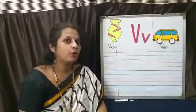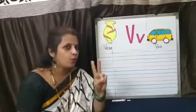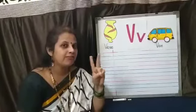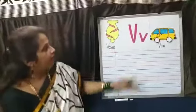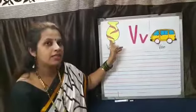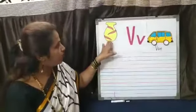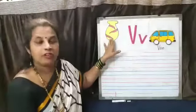In this session we are going to learn to write V, capital V. V for vase. We keep flowers in the vase.